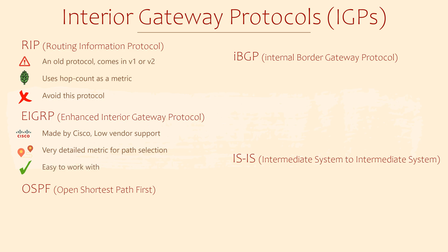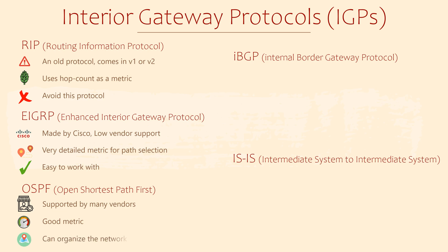Many people prefer OSPF. OSPF has been around for a very long time — it wasn't designed by a specific company, which means it's available to be used by all vendors. This makes it a popular choice in networks that use equipment from various different vendors, and it's quite possibly the most popular IGP for that very reason. OSPF's metric is good but much simpler than EIGRP's — it defines each link as having a cost derived from the bandwidth of the link; the lower the cost, the better the link. OSPF also organises the network into areas, making it easier to organise and plan out the topology. We'll look at OSPF in more detail in the following videos.